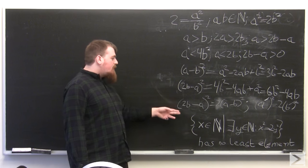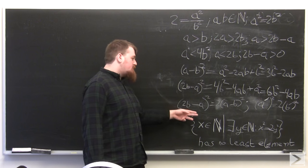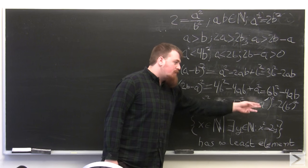So this means that 2b minus a squared equals 2 times a minus b squared. And if we let this be a prime and this be b prime, we have a prime squared equals 2b prime squared.